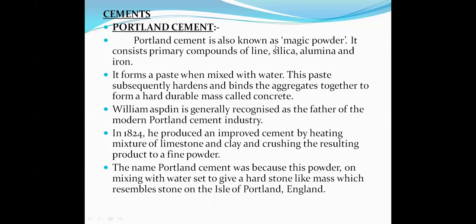Portland cement is also known as magic powder. It consists of the following compositions: number one is lime, number two is silica, number three is alumina, and number four is iron. Lime indicates calcium — calcium oxide derived from limestone. SiO2 is known as silica.